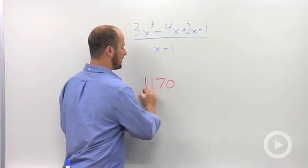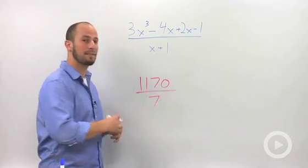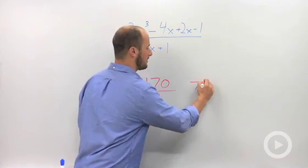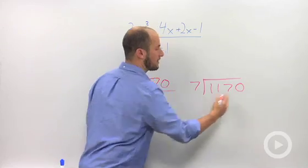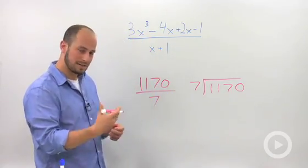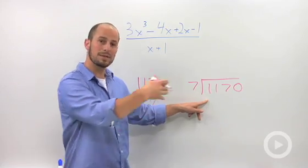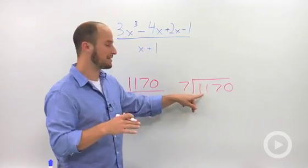So say we're asked to divide 1,170 by 7. What we end up doing is we draw our 7 in a little bracket with a number on the inside. We then start and say, okay, how many times does 7 go into 1? It doesn't, so we go to the next spot. How many times does 7 go into 11?